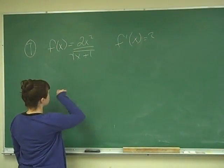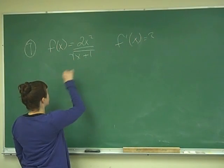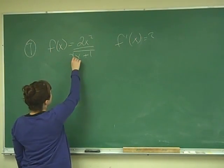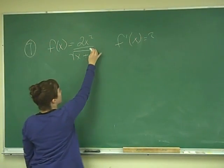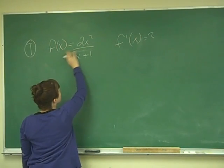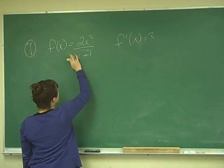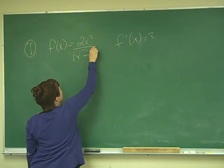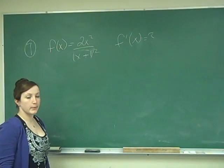So the quotient rule, remember, is the derivative of the high, and I'm going to actually rewrite this bottom as x plus 1 to the 1 half power, because remember, those are the same.